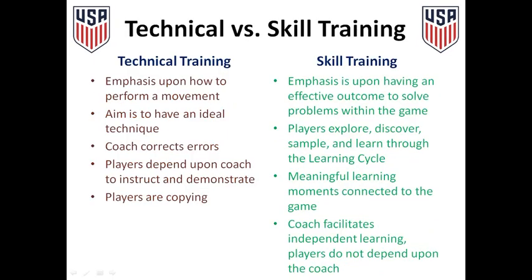We can then expand upon the differences between technical training and skill training. The emphasis during technical training is upon how to perform a specified movement, while skill training introduces the need to read, decide, and execute to solve problems that occur within the game environment. The aim of technical training is to perform an ideal movement while conducting a specified task. Skill training encourages players to explore and engage the learning cycle as they problem solve within the game environment. Technical training heavily relies upon the coach to correct errors and demonstrate ideal movements, while skill training offers meaningful autonomous learning moments connected to the game and the coach looks to facilitate this independent learning.